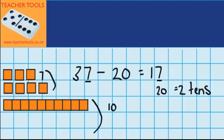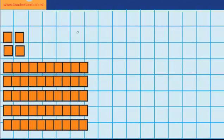Now let's try another question. This time I've got 54. You can see that 54 is made up of 5 tens and 4 ones.